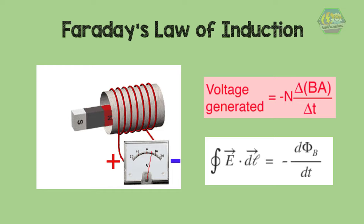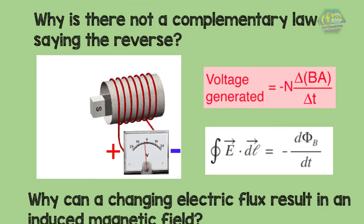Maxwell's first and second equations were so similar, one for electric fields and one for magnetic fields, that he knew there must be an equation that complemented Faraday's law as well. If a changing magnetic flux produces an electric field, why is there not a complementary law showing the reverse? Why can a changing electric flux result in an induced magnetic field?